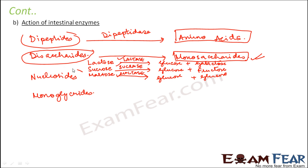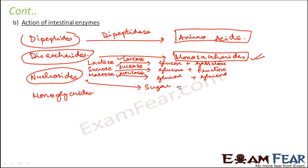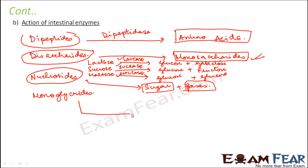Now it is the turn for the nucleosides. Nucleosides contain sugar and bases. These nucleosides, in the presence of enzymes, get converted into the corresponding sugars and bases, which are again the simplest absorbable form. And lastly, monoglycerides get converted into fatty acids and glycerol.